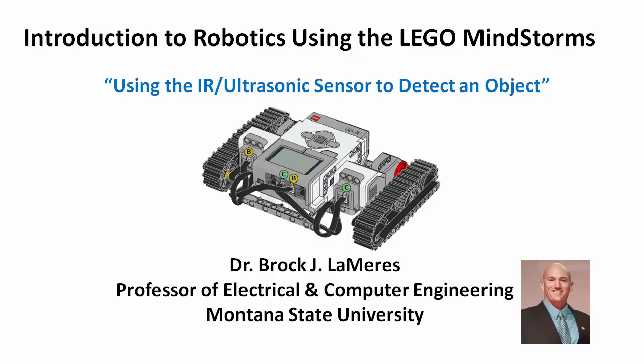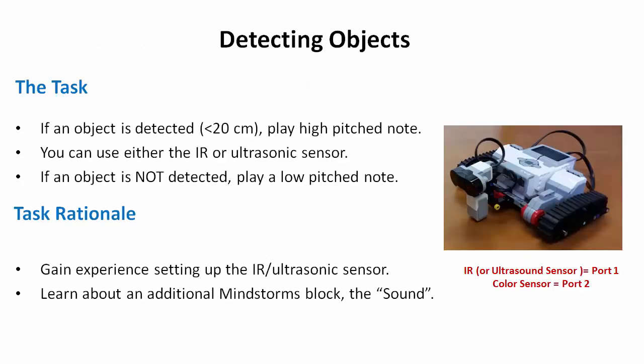We're going to look at using one of our sensors to detect an object. We'll be using the EV3 IR sensor, but if you don't have the IR sensor you can do this equally with the ultrasonic sensor. I'm going to call it IR for the rest of this video, but if you're using the ultrasonic sensor just know I'm talking about either sensor. Make sure it's connected to port one of the EV3 brick.